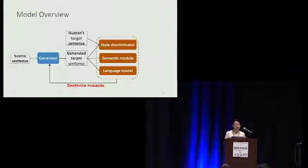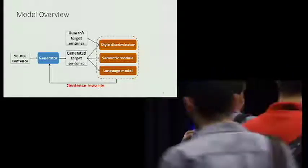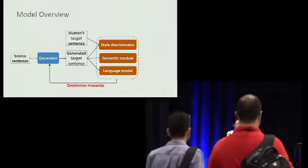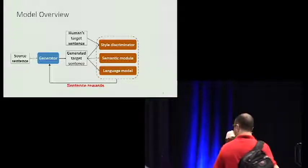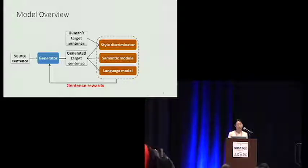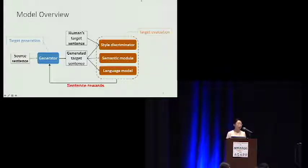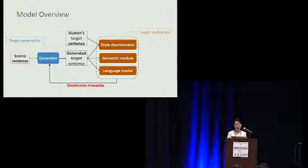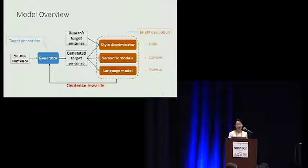Here is an overview of our model. We have four main components. The first is the generator, which takes the source sentence as input and produces a sequence of target tokens expected to be in the target style. The other three modules are evaluators: a style discriminator that evaluates the style of the generated sentence, a semantic module that measures how well the semantic meaning is preserved, and a language model that evaluates fluency. The three evaluators return sentence rewards as feedback to the generator.